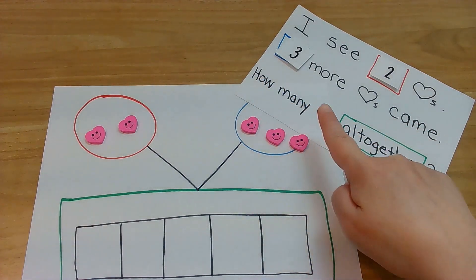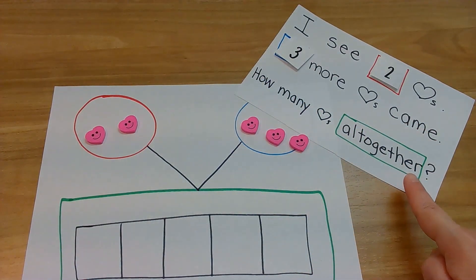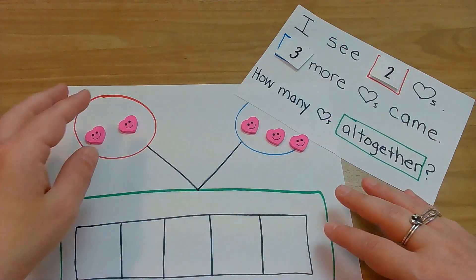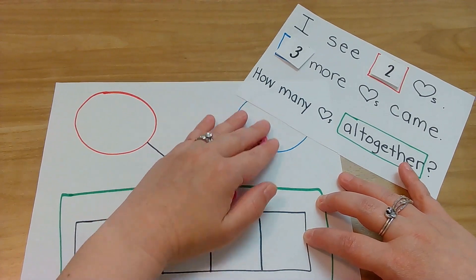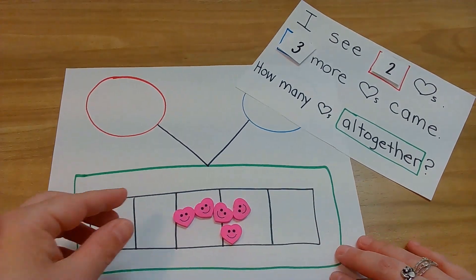Now, how many hearts altogether? And that's in our green rectangle. Oh, and here's our green rectangle. That means we have to move all of them down here. We go, get down here. Okay, ready? Now let's count as we put them in.